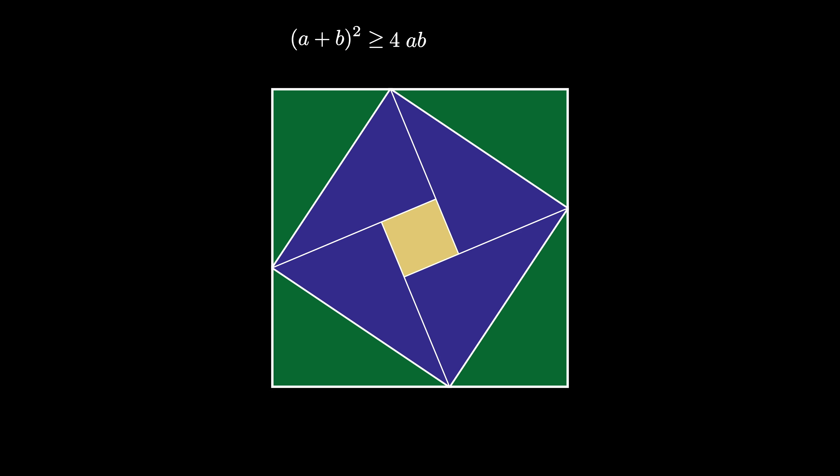From this we conclude that we have equality amongst the inequality if and only if a minus b is 0, so that a equals b.